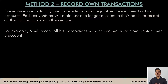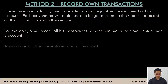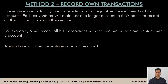For example, if there are two venturers, A and B, and both have entered into a joint venture, and A has entered into a transaction for the joint venture business, he would record that transaction in his own books in an account termed as 'joint venture with B account.' Similarly, B would record all his transactions in an account termed as 'joint venture with A account' in B's books. Transactions of other co-venturers are not recorded — A would not record any transaction that B has done.